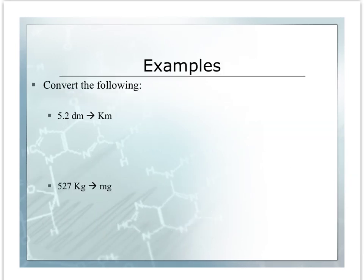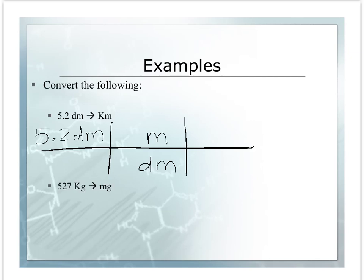Okay, I have a few more examples to do with you. 5.2 decimeters to kilometers. So we're going to start with the number that we know: 5.2 decimeters. Set up our t-chart. We want decimeter on the bottom, and we're going to go to meters. Remember, that's our base unit. Then we're going to go to meters to kilometers. And one meter is 10 decimeters, and one kilometer is a thousand meters.